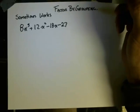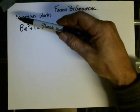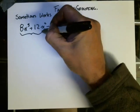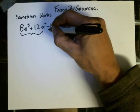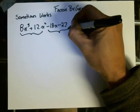What you have to be able to do is recognize a binomial factor in the first two terms that is the same as a binomial factor in the second two terms.